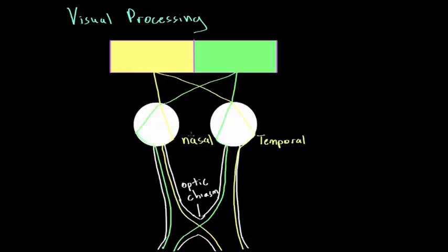What this effectively does is take the right visual field and send all that information to the left side of the brain. Like the rest of the body, all information coming from the right visual field goes to the left side of the brain, and all information from the left visual field goes to the right side of the brain.